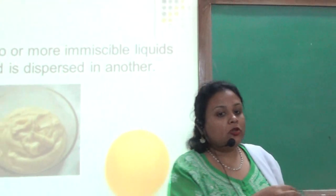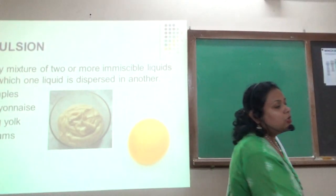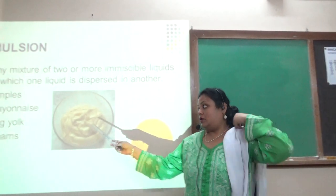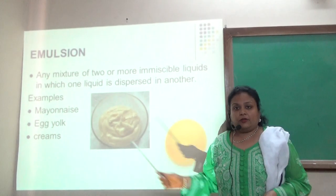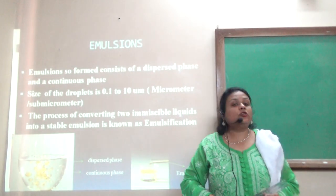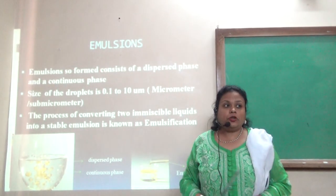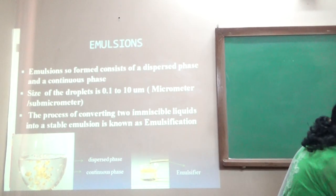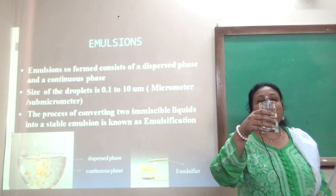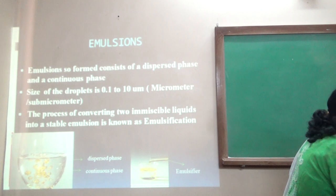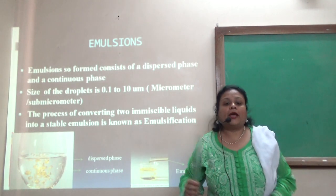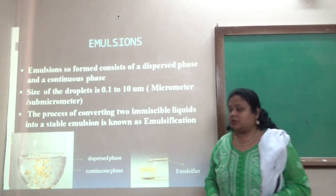Examples of emulsions are mayonnaise, egg yolk, and cream. When you look at the size of the particles, the size of the oil droplets is from 1 to 10 micrometers or sub-micrometers.